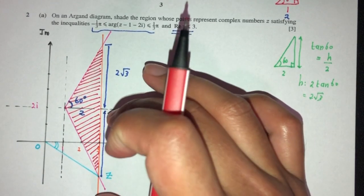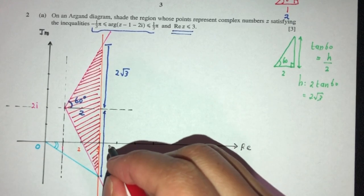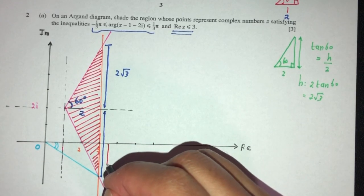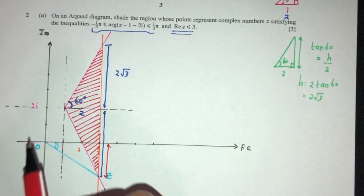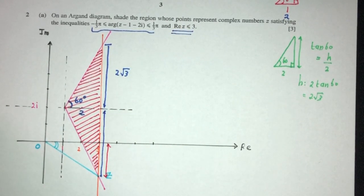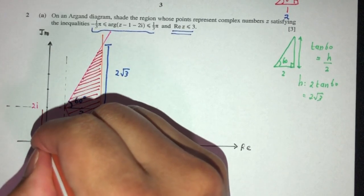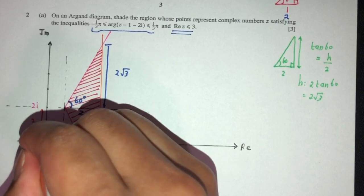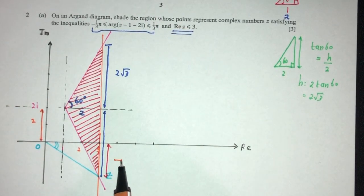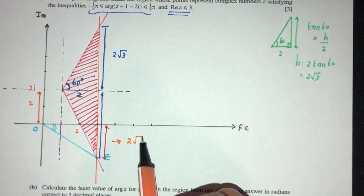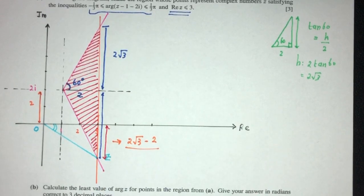We only care about the relevant length here. By deduction, the length we need is the total 2√3 minus the imaginary part of the starting point, which is 2. Therefore, this length equals 2√3 minus 2. The point (1, 2) has imaginary part 2, so 2√3 minus 2 is the required length.